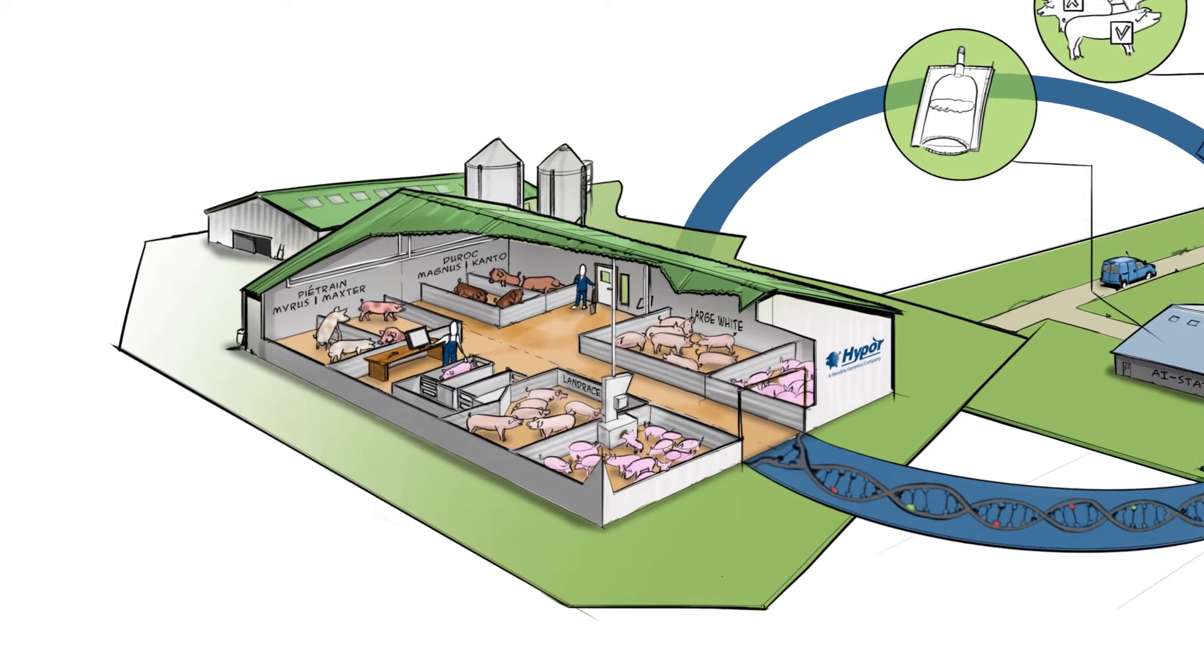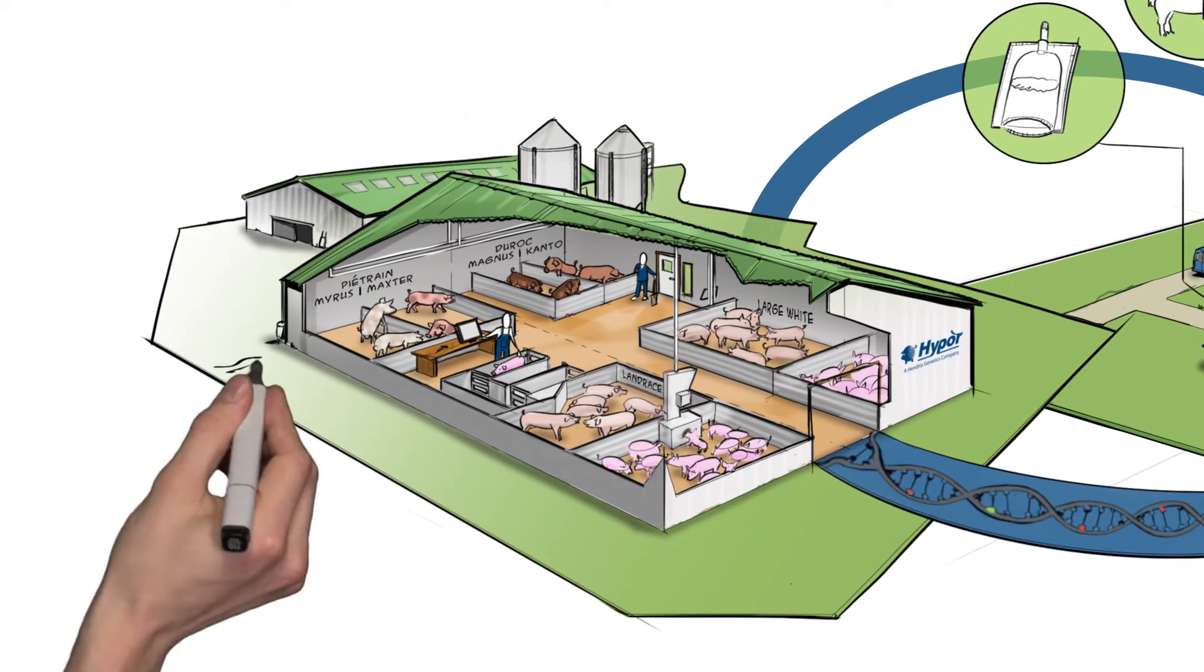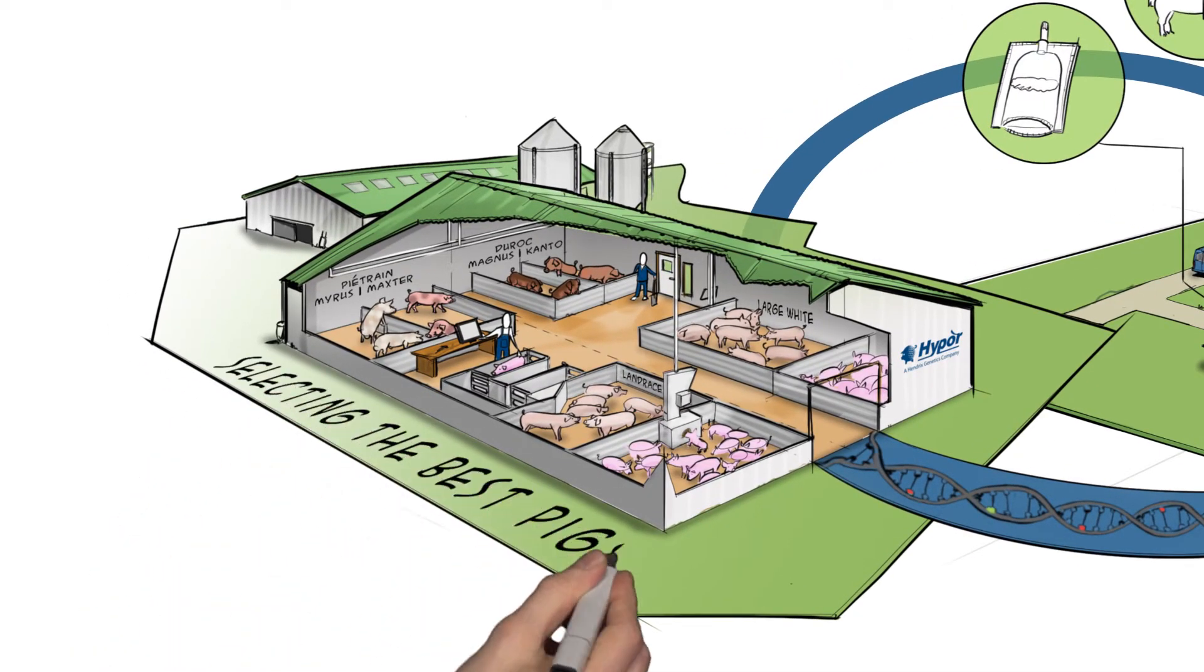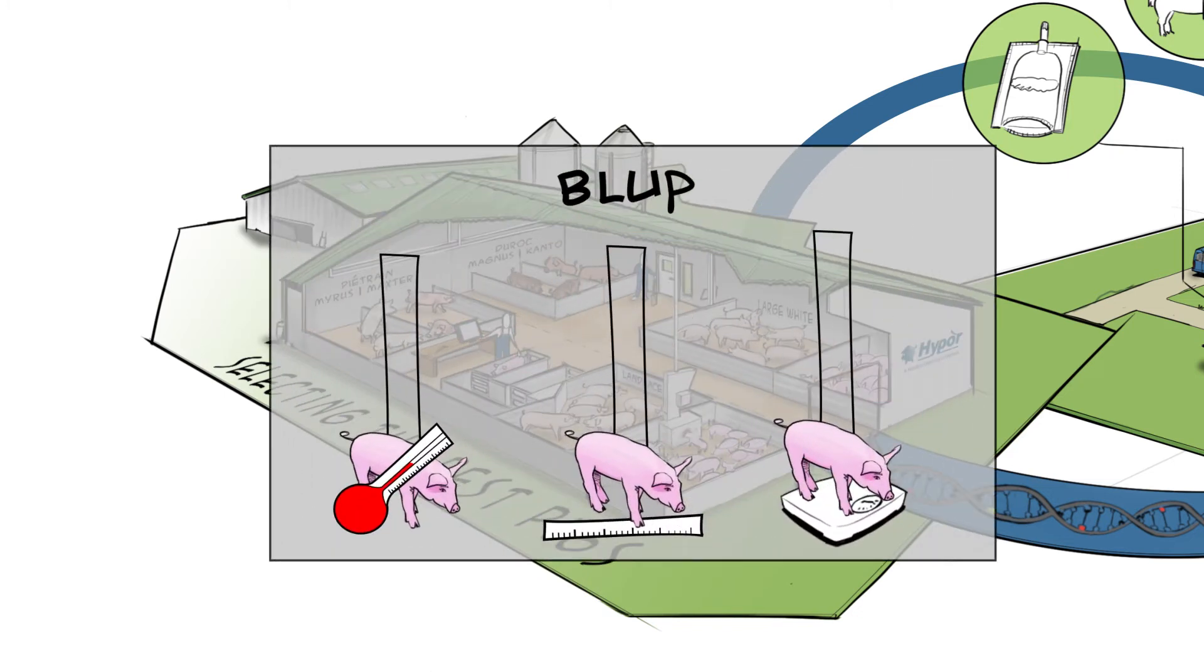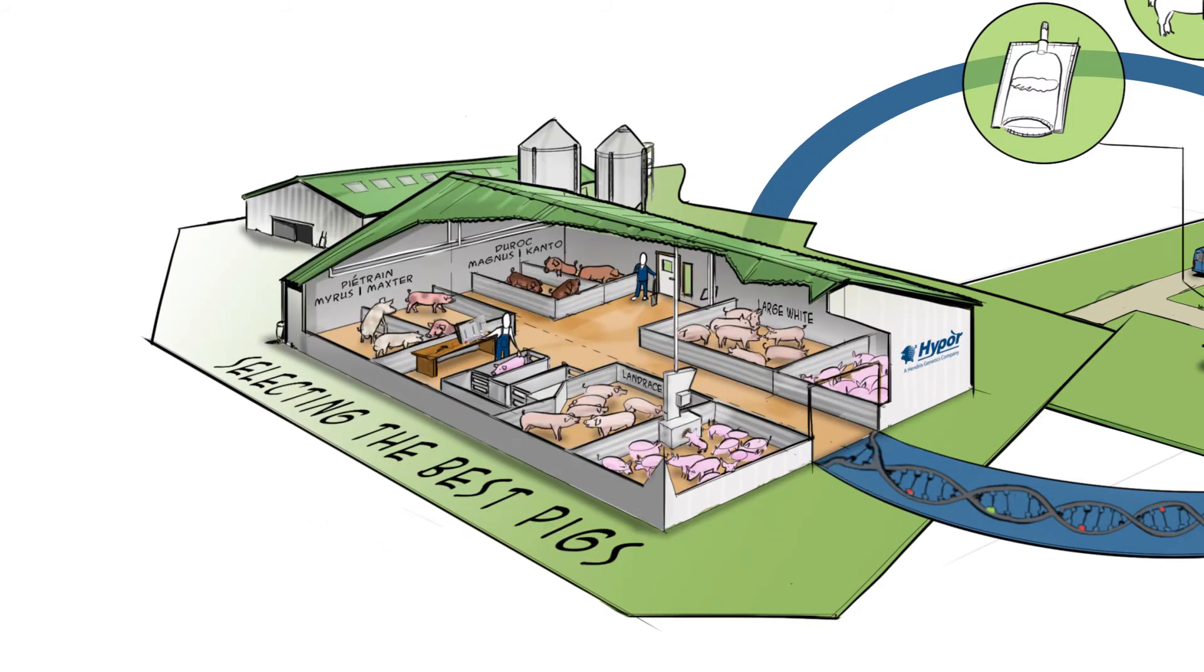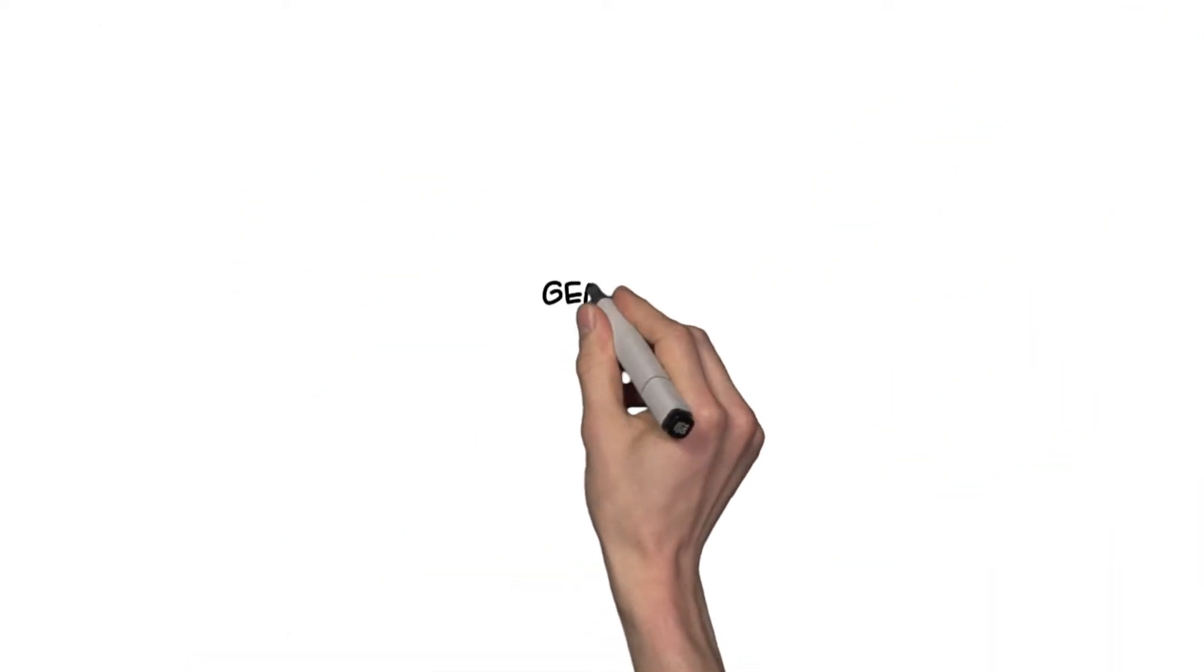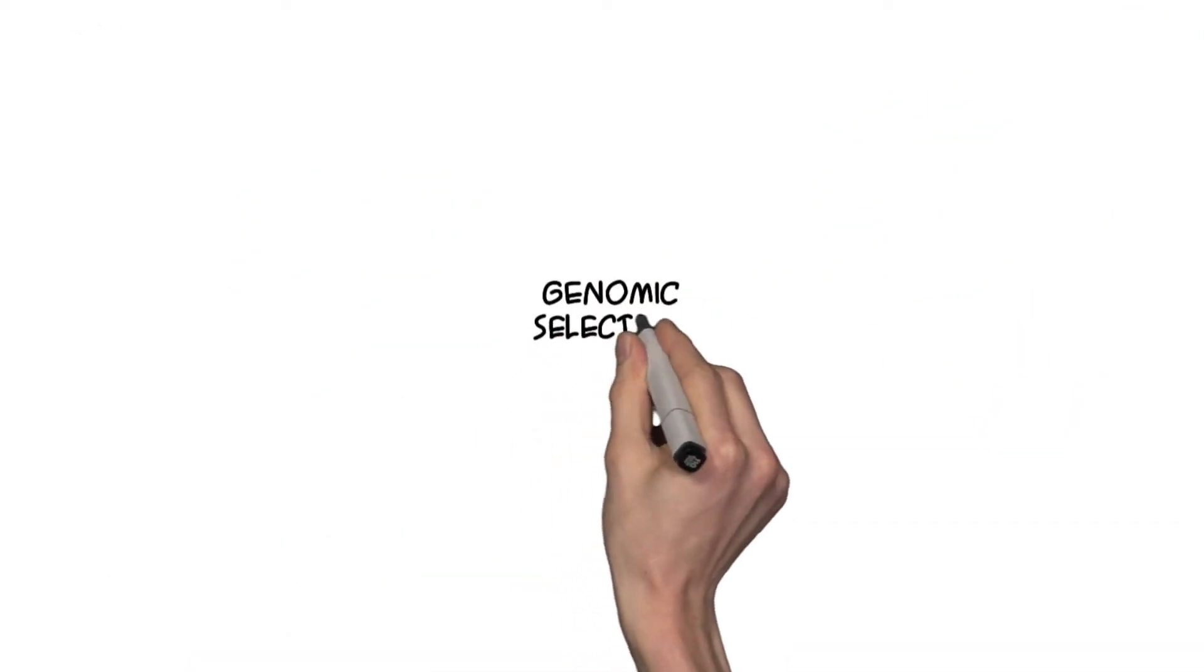Collaboration within the chain is essential. How do we select the best pigs? Models like Best Linear Unbiased Prediction, or BLUP, estimate an animal's genetic value based on a wide variety of measurements. One of the latest innovations in pig genetics is genomic selection.